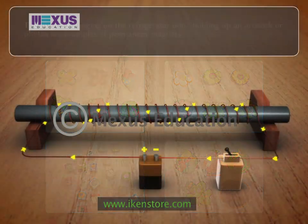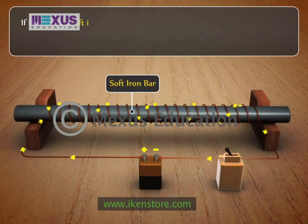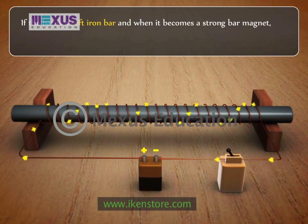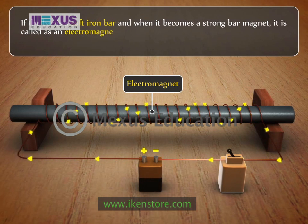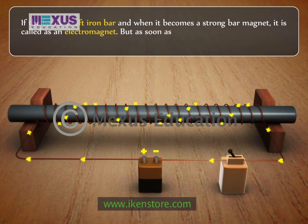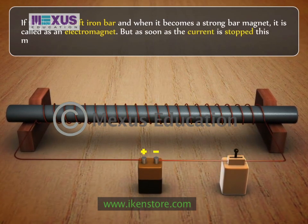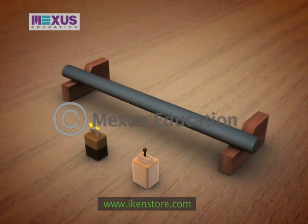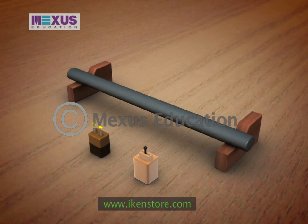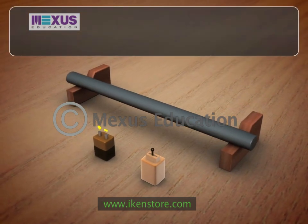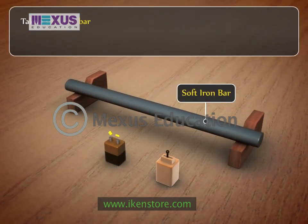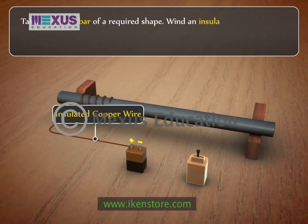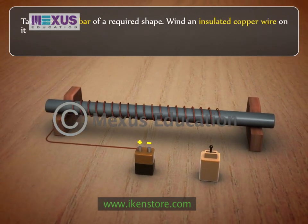If the bar is a soft iron bar and it becomes a strong bar magnet, it is called an electromagnet. But as soon as the current is stopped, this magnet loses its magnetism. To make an electromagnet, take a soft iron bar of the required shape and wind an insulated copper wire on it.